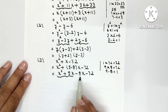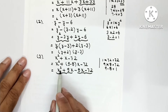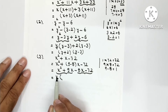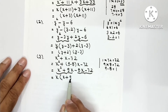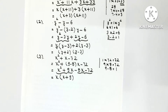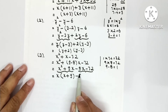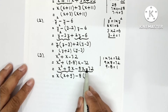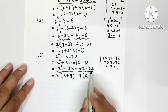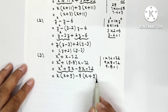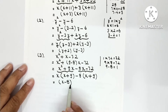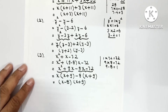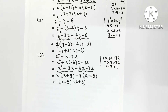From the first two terms, x is common: x into (x plus 9). From the last two terms, minus 8 is common: minus 8 into (x plus 9). Since x plus 9 appears in both brackets, one bracket becomes x minus 8 and the other x plus 9. So the answer is x minus 8 into x plus 9.